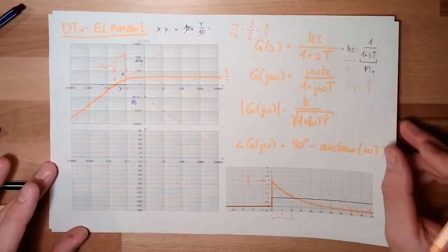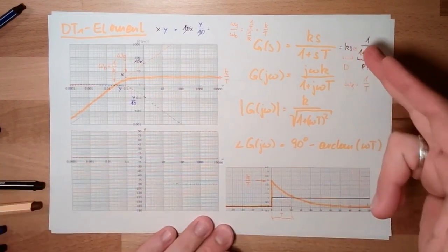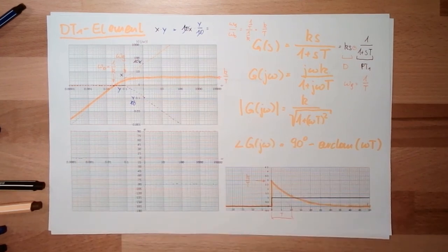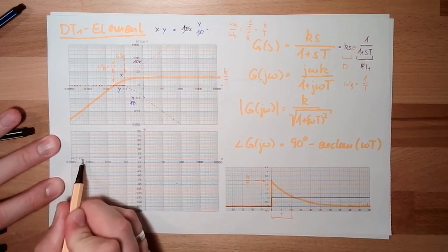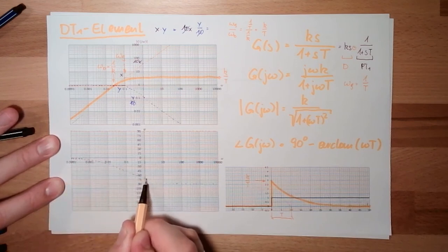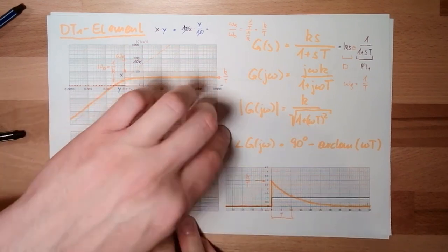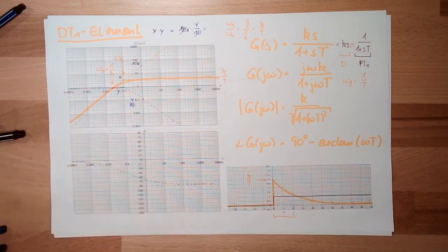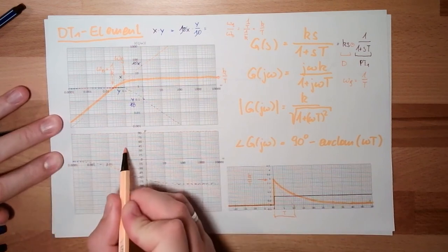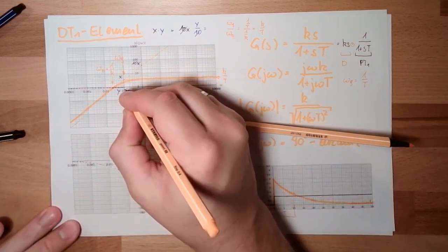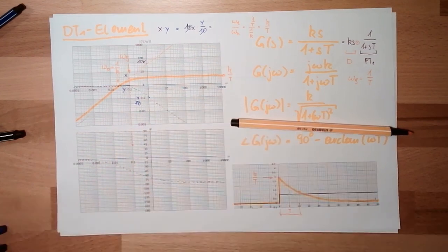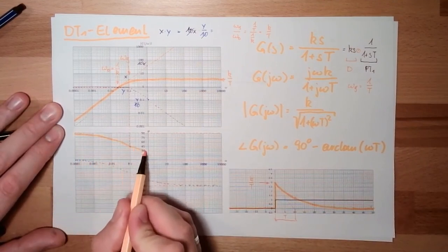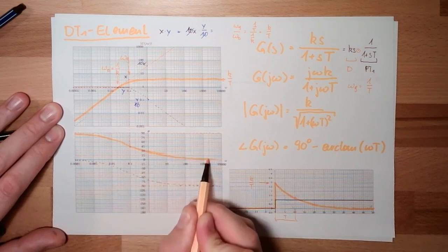Now let's look at the argument in the Bode plot. Two imaginary numbers multiplied — their angles add. The D part is always at plus 90 degrees. The PT1 part starts at zero, reaches minus 45 at the band frequency, and approaches minus 90. Adding them: the dt1 element starts at 90 degrees, is at 45 degrees exactly at the band frequency (90 minus 45), and then approaches zero degrees.